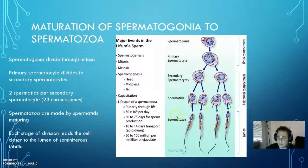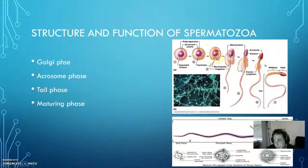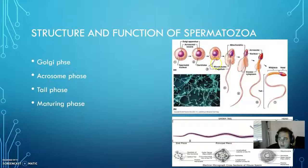Going from a spermatid to spermatozoa — a spermatozoa is going to have a head at one end, a tail at the other, mitochondria in the midpiece, and an acrosome at the head. That process takes place in four different steps. The first is the Golgi phase, when the head starts to form — you can see the head is starting to form here — and it's also when the DNA starts to condense and package itself together. Next is the cap phase, or the acrosome phase.